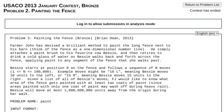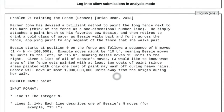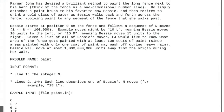For example, the move '10L' means that Bessie moves 10 units to the left, and the other direction is given by the letter R. So a move of '2R' would mean that Bessie moves two units to the right. Given a list of Bessie's moves, we want to figure out what area of the fence gets painted with at least two coats of paint.